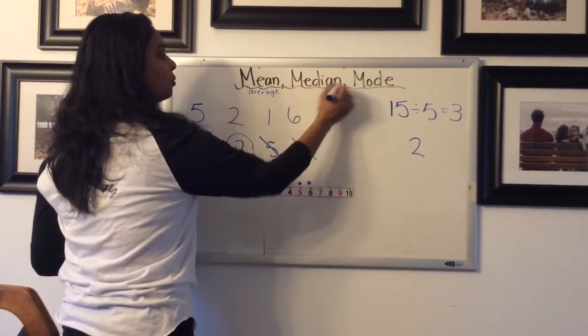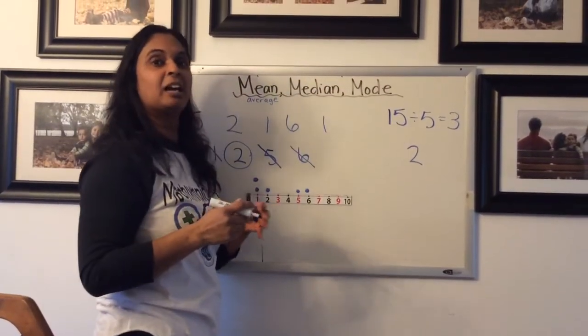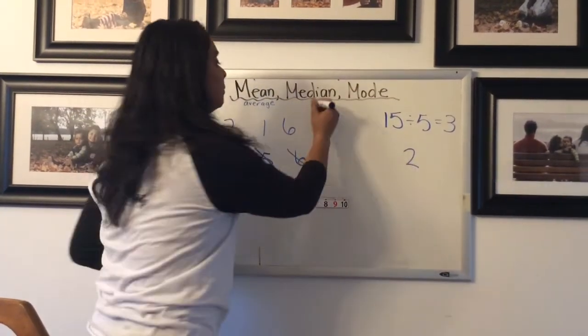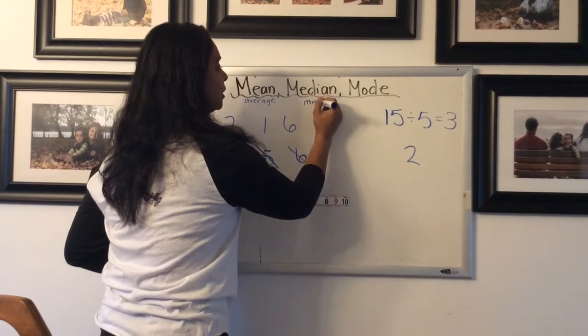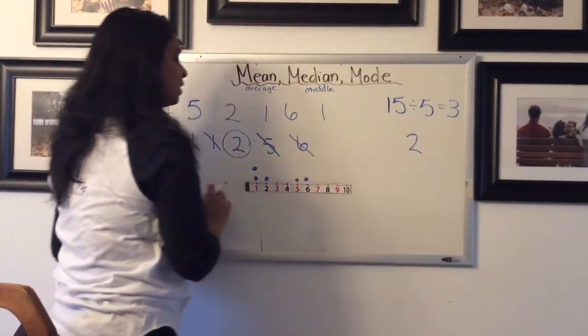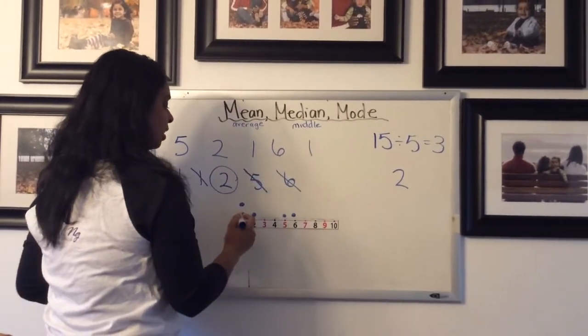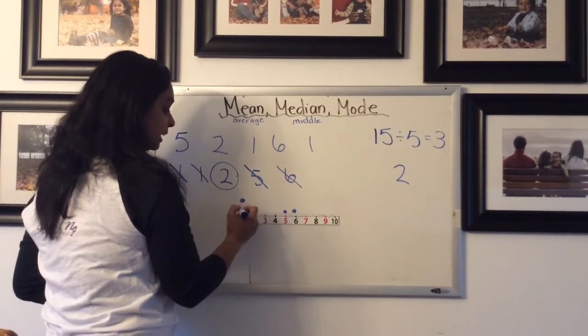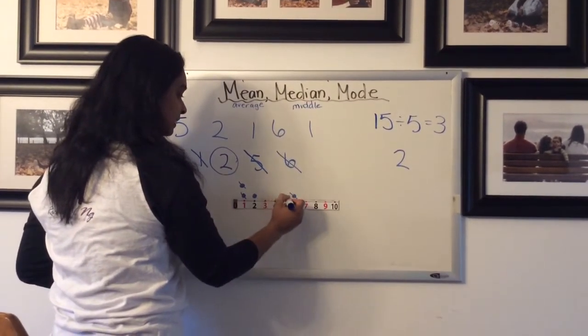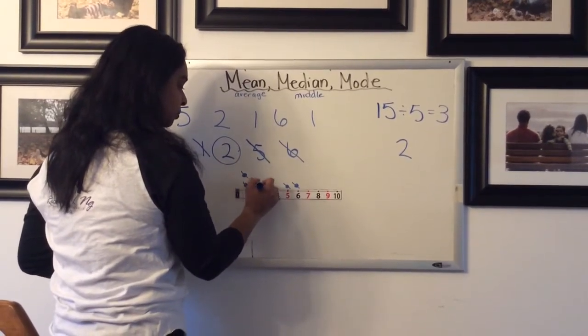Now, so to remember what median is, I always use the example of a highway and the median that runs down the middle of the highway. So finding the middle when you are finding the median. Do that first by putting your data values in order and then finding the middle by working from the outside in. And you can do that on a number line like this too. So crossing off like this. And then you're left with 2 here.